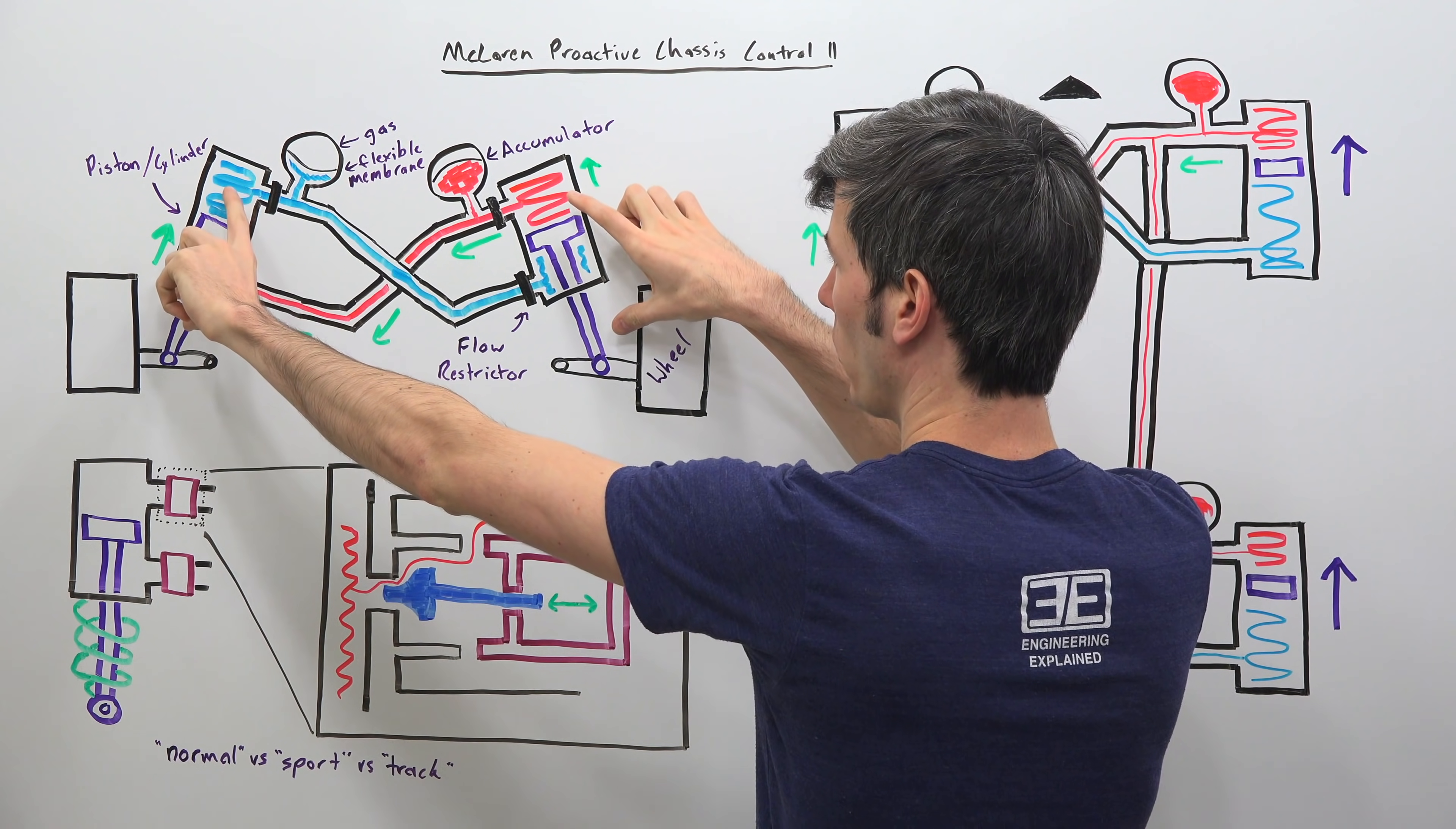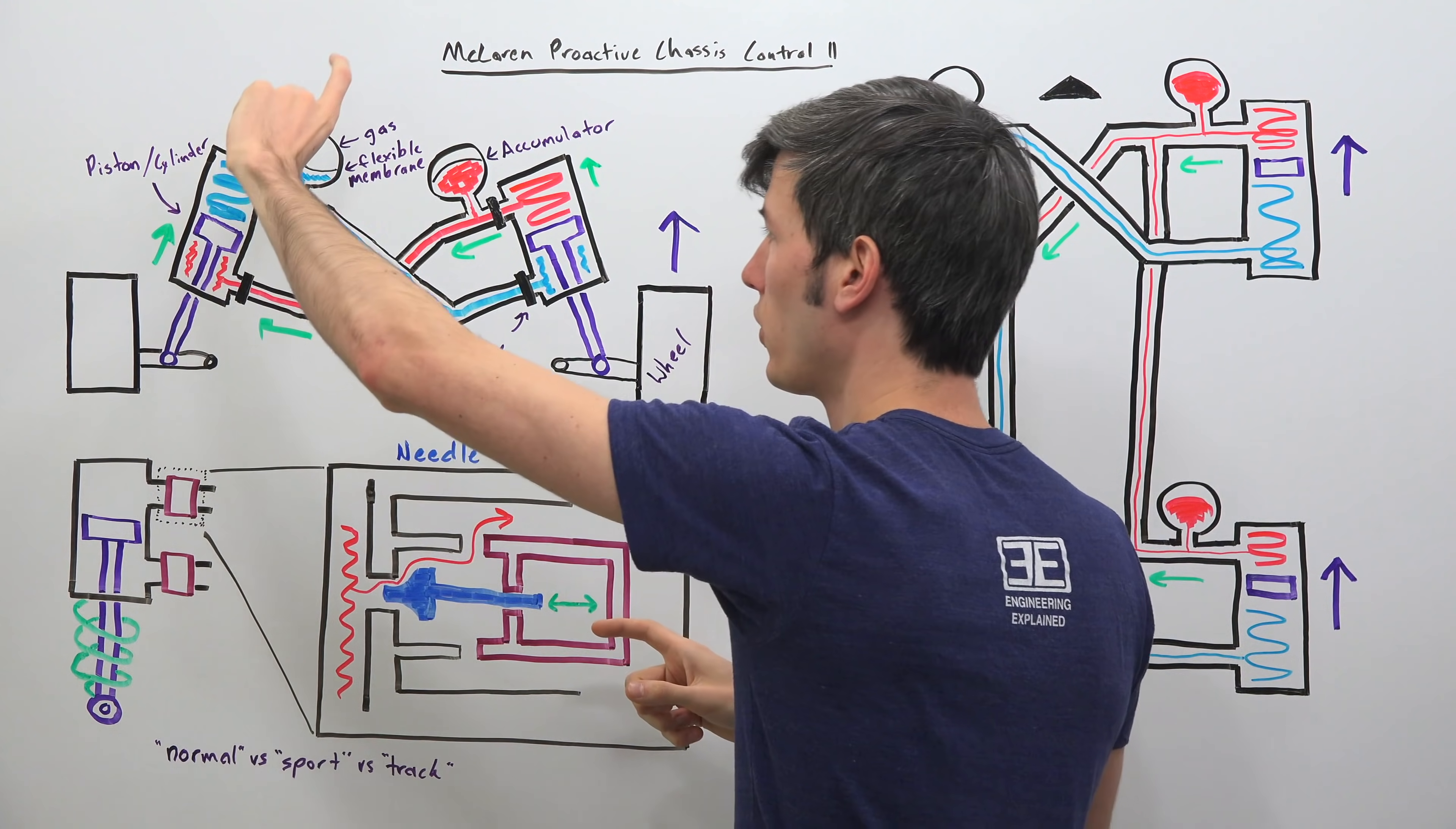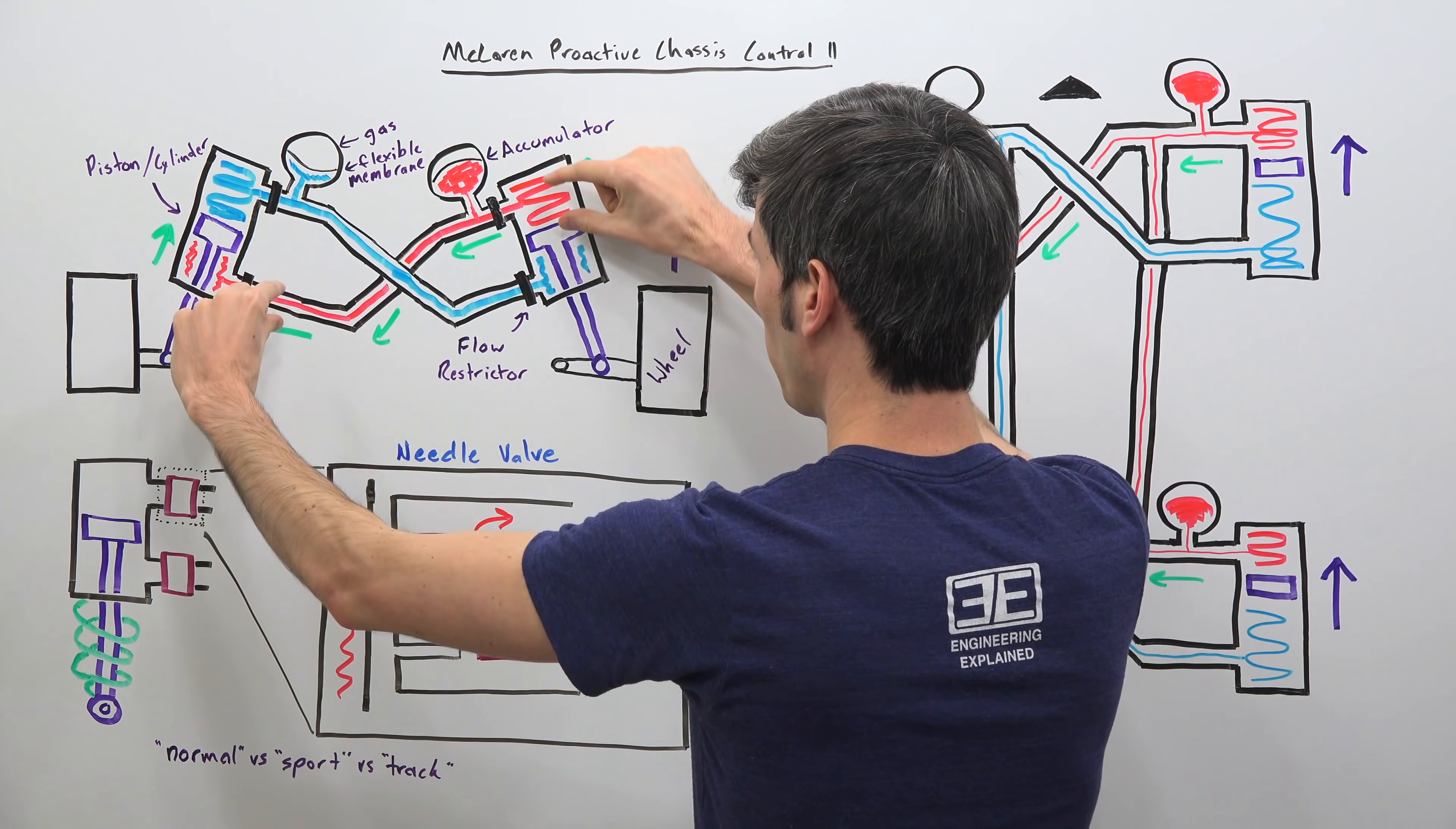Then you have your damper and so this is just like your shock absorber in any other car except instead of it being an individual component it's actually linked to the other shock absorber. So both dampers have these pistons within the cylinder and then there is a fluid and that fluid and piston can move up and down and that fluid then transfers to other locations.